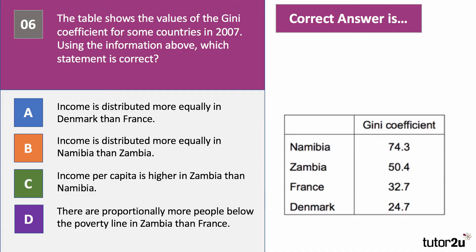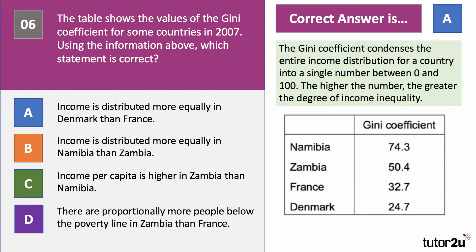Question six. The table shows the values of the Gini coefficient for some countries in 2007. The answer is A: income is more equally distributed in Denmark than in France, because Denmark has a lower Gini coefficient. Namibia has a very high Gini coefficient of 74.3 or 0.743. The Gini coefficient condenses the entire income distribution for a nation into a single number — if it's zero, that's perfect equality; if it's 100 or one, that's perfect inequality. Consider the Lorenz curve for Namibia — a very unequal level of income distribution.